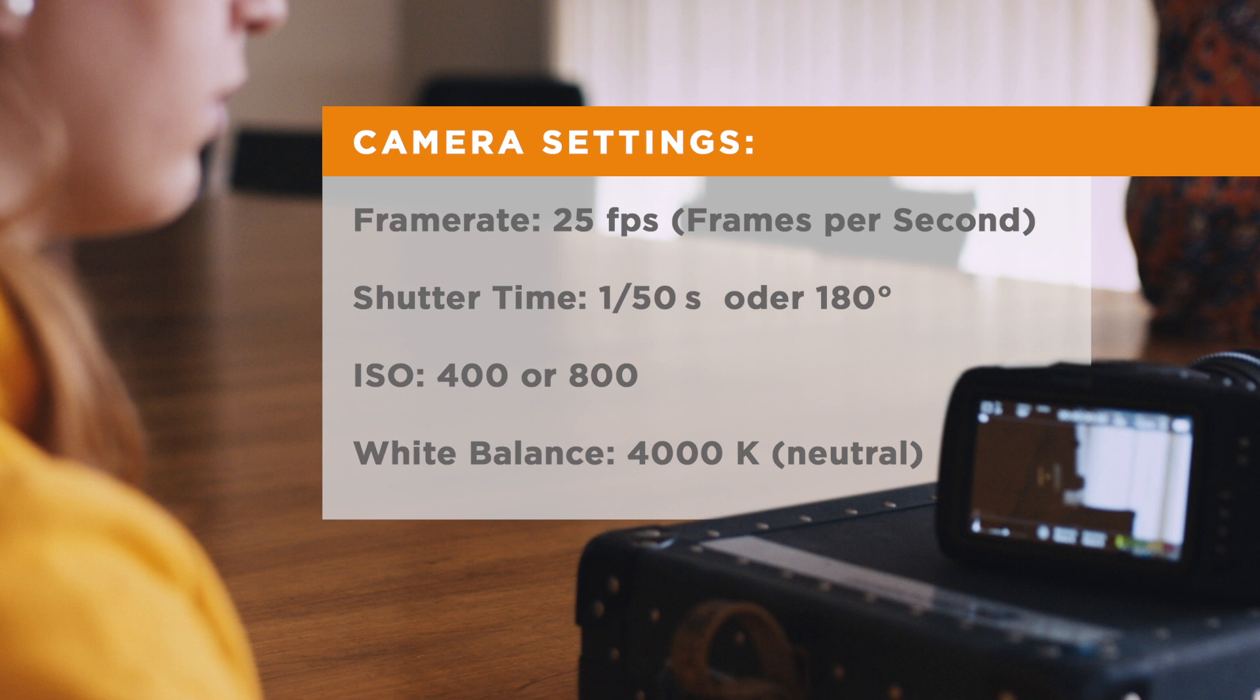For ISO, 800 is enough with Film Digital Lighting. Depending on the exposure of the film, it's sometimes possible to work at 400 ISO. As white balance, you can first choose 4000K and this can be modified later in DaVinci Resolve.